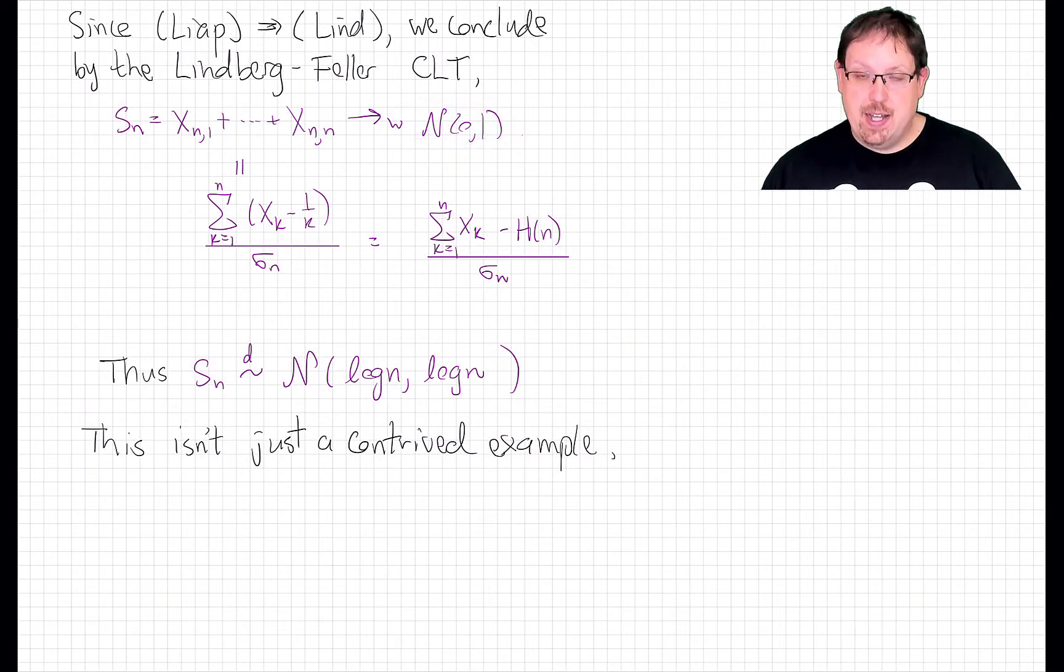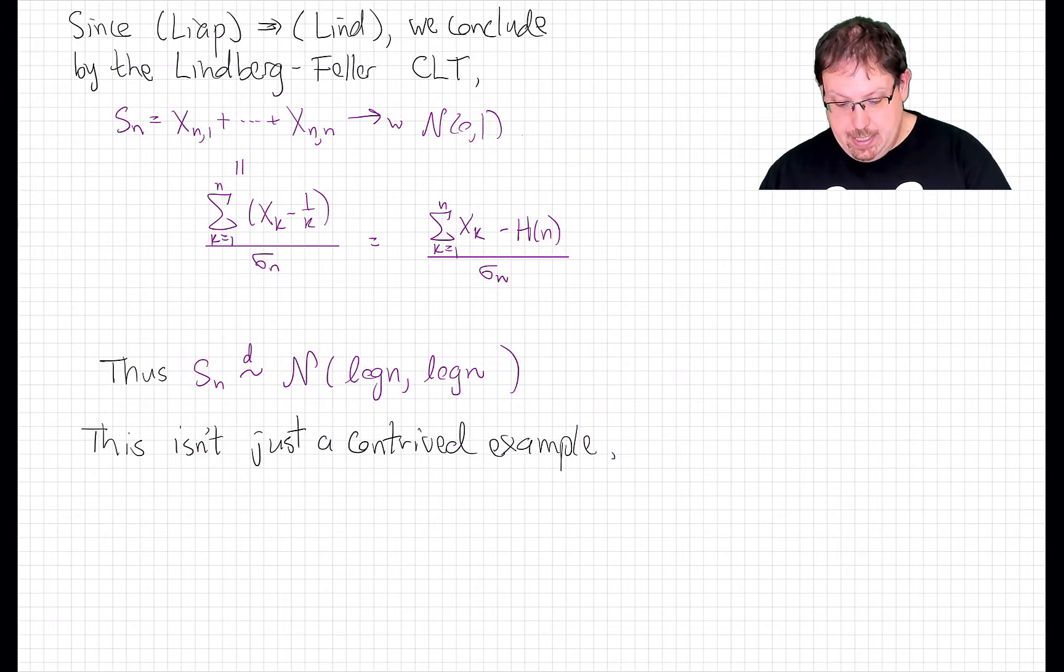Let's see what that says about the original Bernoulli random variables. This sum is the sum of the centered X's divided by this cumulative variance. And so that says that the sum of the original independent but not identically distributed Bernoulli random variables minus the harmonic number divided by sigma_n is approximately a standard normal,